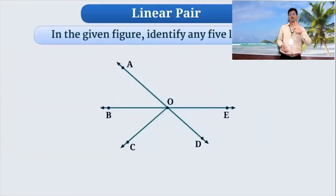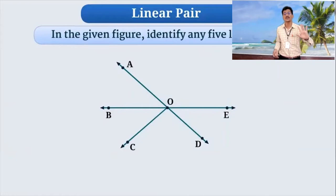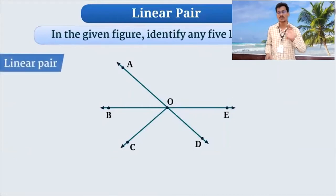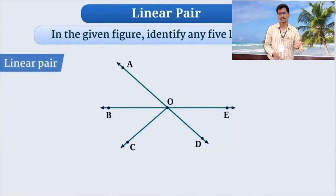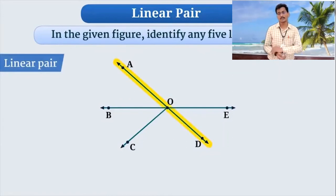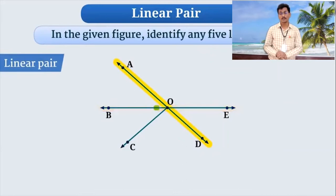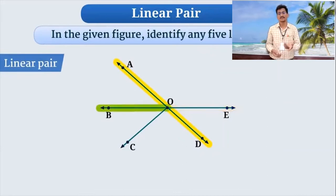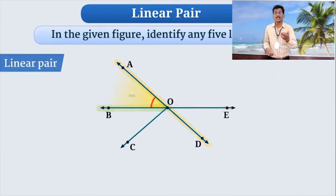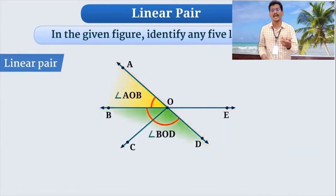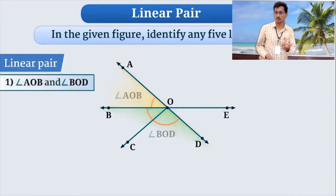Now identify five pairs of linear pairs in this figure. If you will check, some straight lines are there because of AD or BE. These are straight lines. Because of this, if you will find, because of common arm OB, AOB and BOD, two angles are also linear pairs.